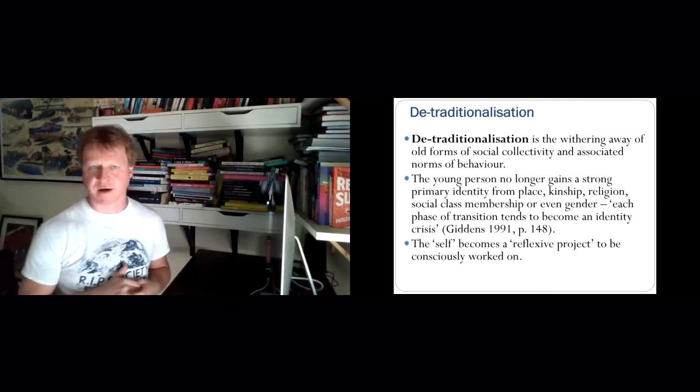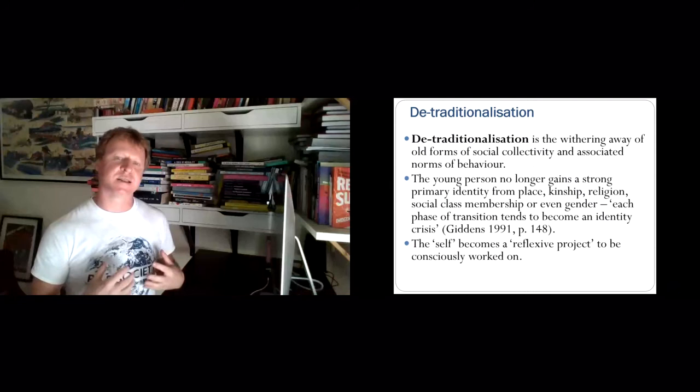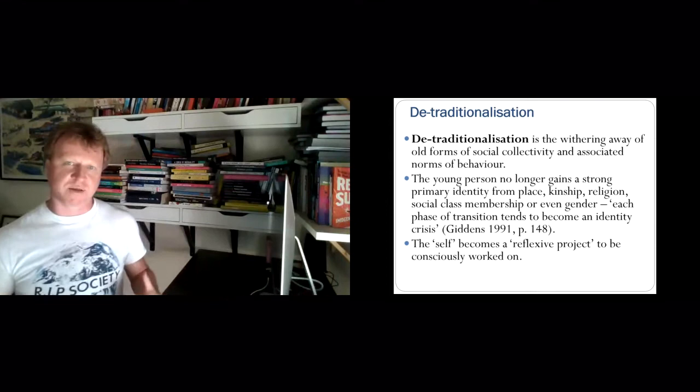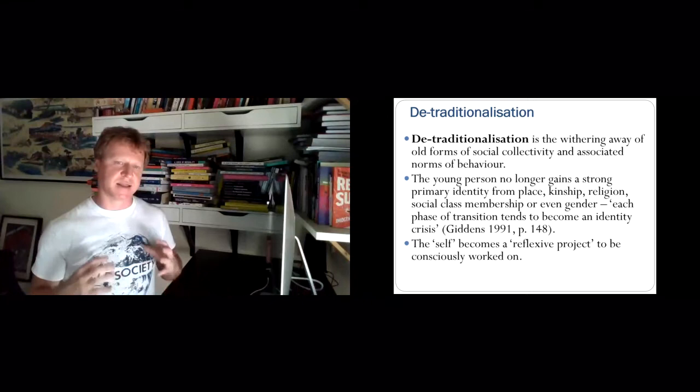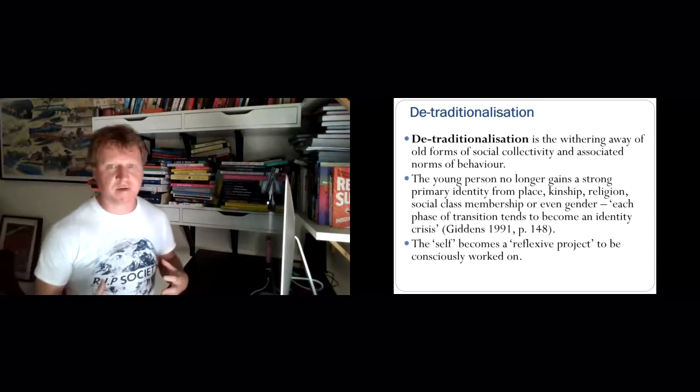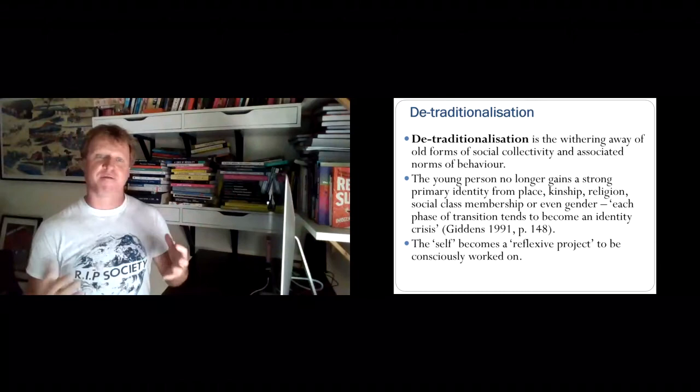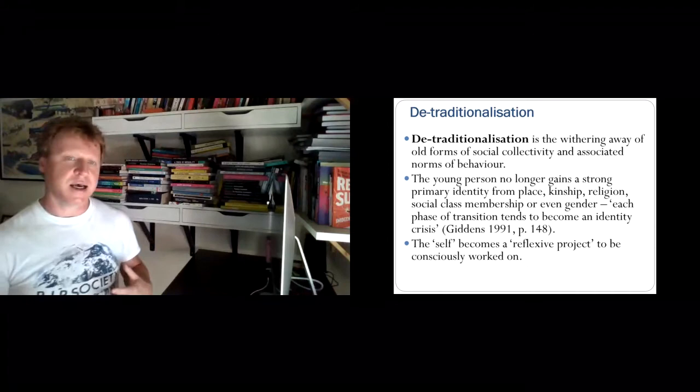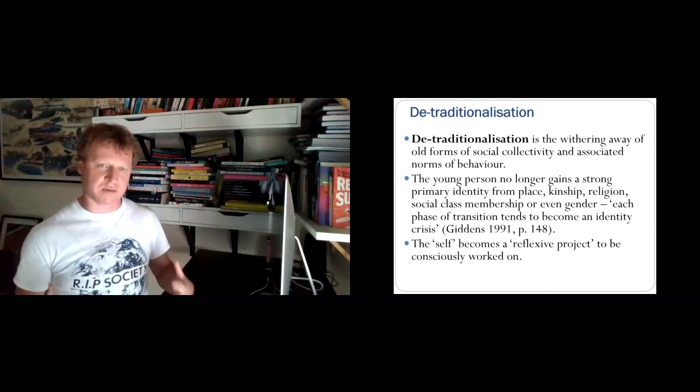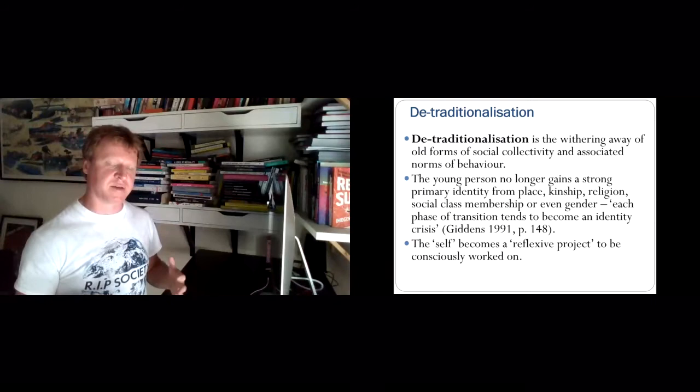This is all bound up in what Giddens has called detraditionalization—the idea that there's been a withering away of those old social collectivities and associated norms of behavior. Things like place, kinship, religion, social class, even gender—these things still really matter to people, but they become more about things we can associate through forms of self-identity rather than necessarily being imposed upon us. This means self becomes a reflective project for us to work on. There's a lot of critique of this perspective. It seems in many ways the reflexive person that Giddens and Beck talk about is a relatively privileged white person that's free from the actual marginalizations and discriminations of race, gender, and class.